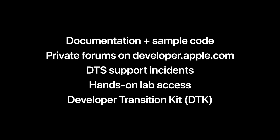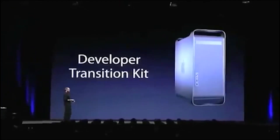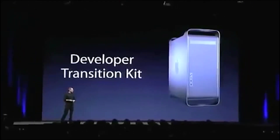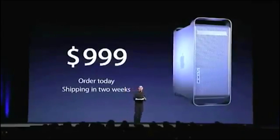This program also includes new developer transition kit hardware so developers can get going even before we ship production systems. We will be shipping units out starting this week — within two weeks — so you can get to work. We expect the transition to take about two years, so this is a two-year transition.